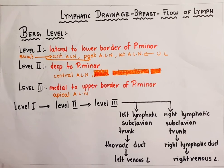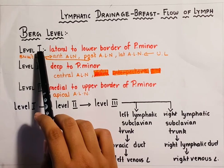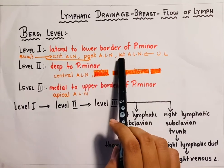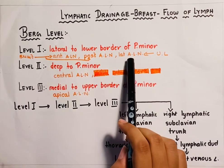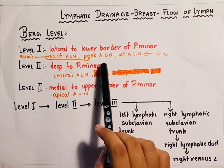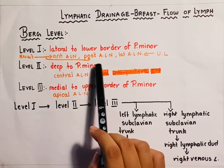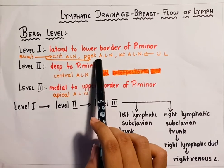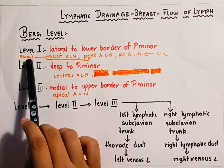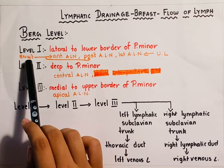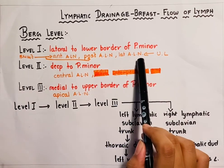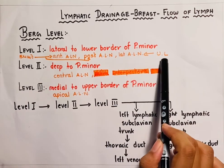Now coming to the level 1 group of lymph nodes. The level 1 group includes the anterior, posterior and lateral group of axillary lymph nodes. Amongst these three groups, the anterior and posterior group drain the lymph from the breast, whereas the lateral group of axillary lymph nodes drains the lymph from the upper limb.